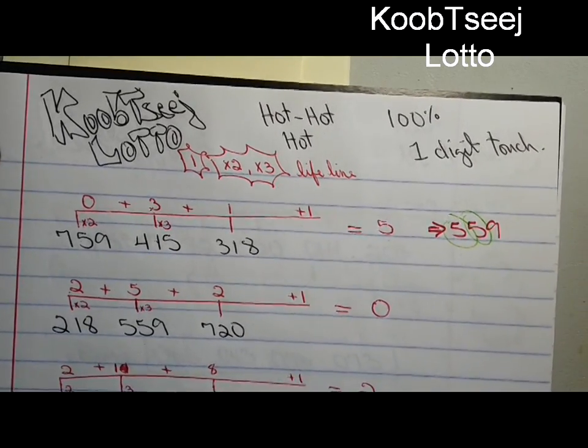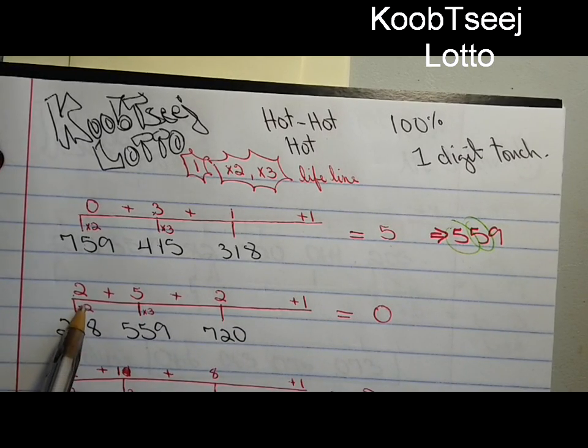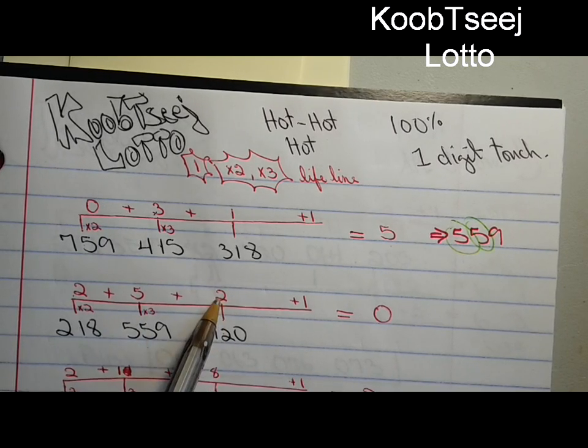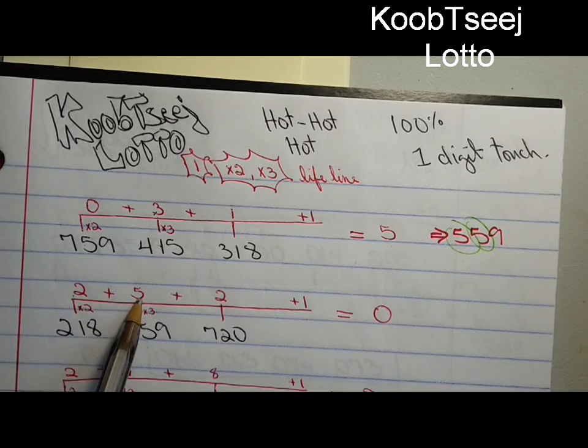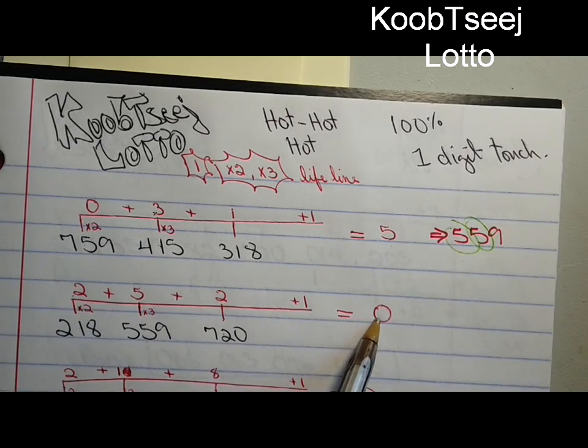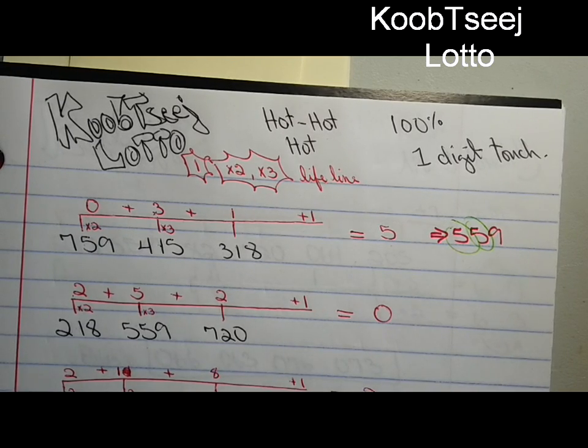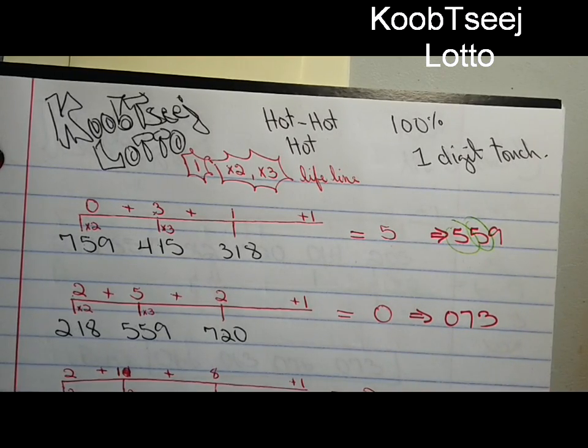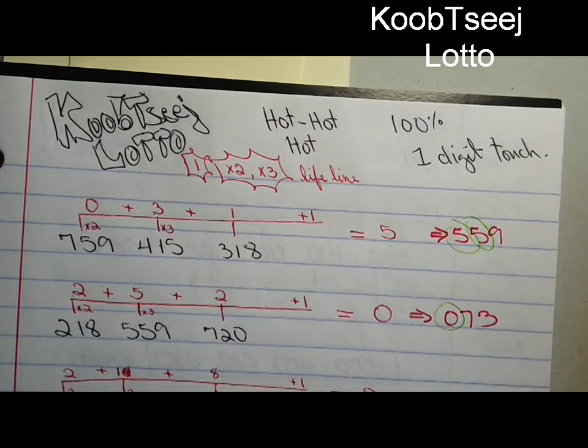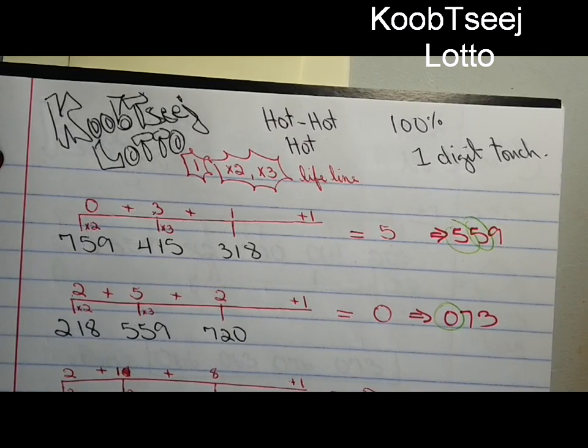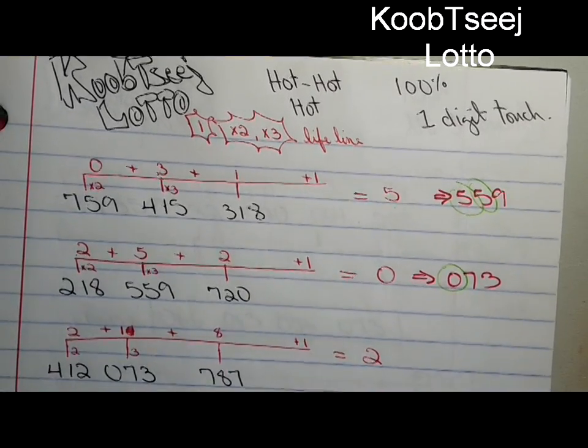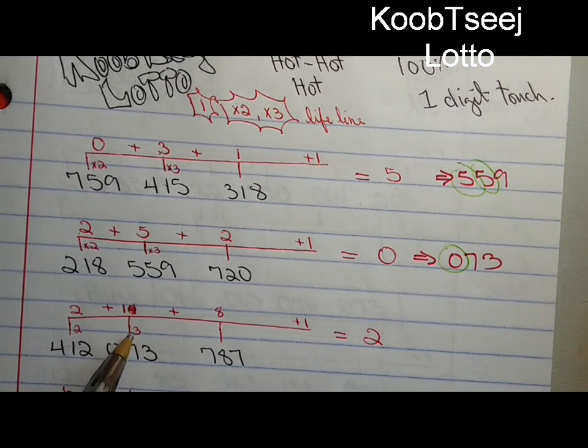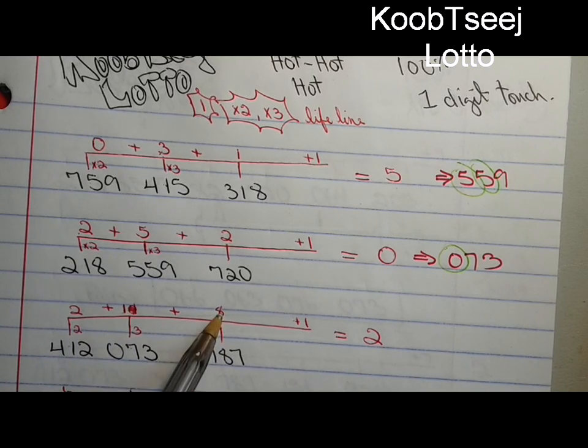Now, two times one is two, three times five is fifteen. The two goes up there. We're checking for zero here. It's ten, so we're not getting it by soon.